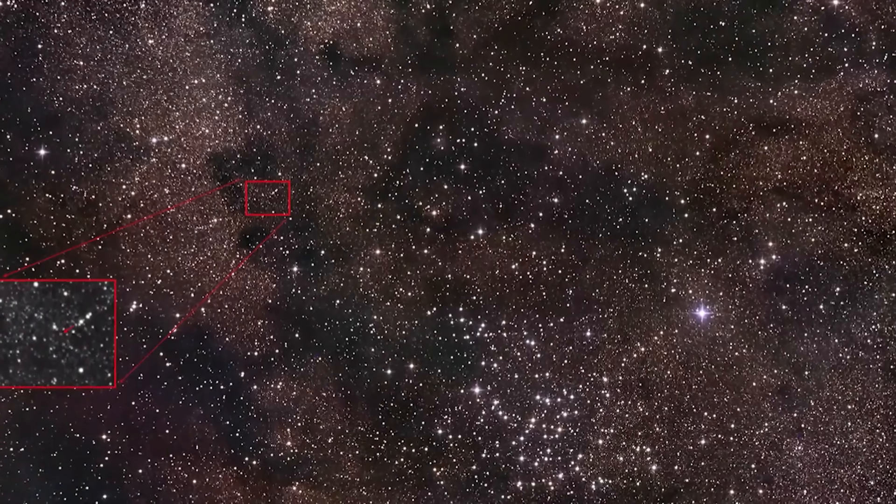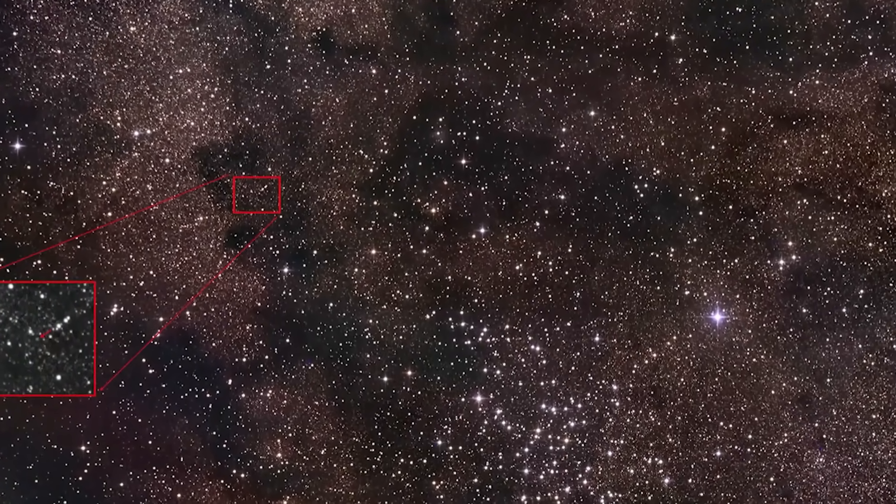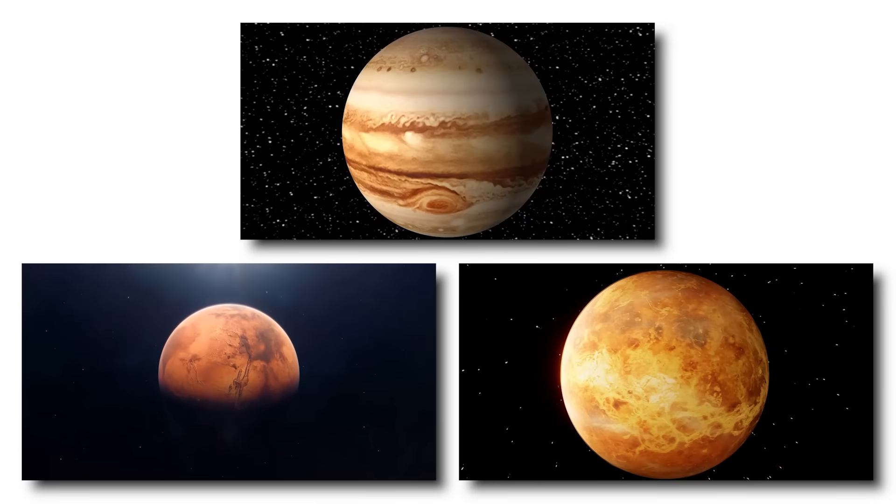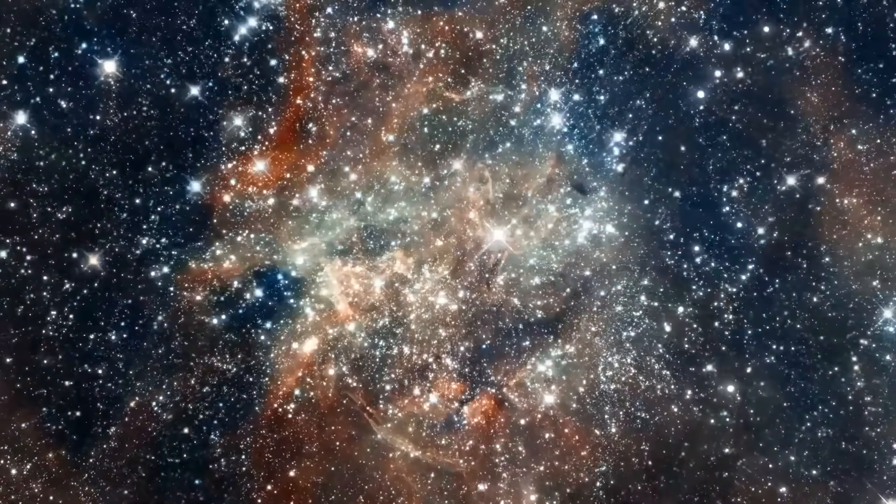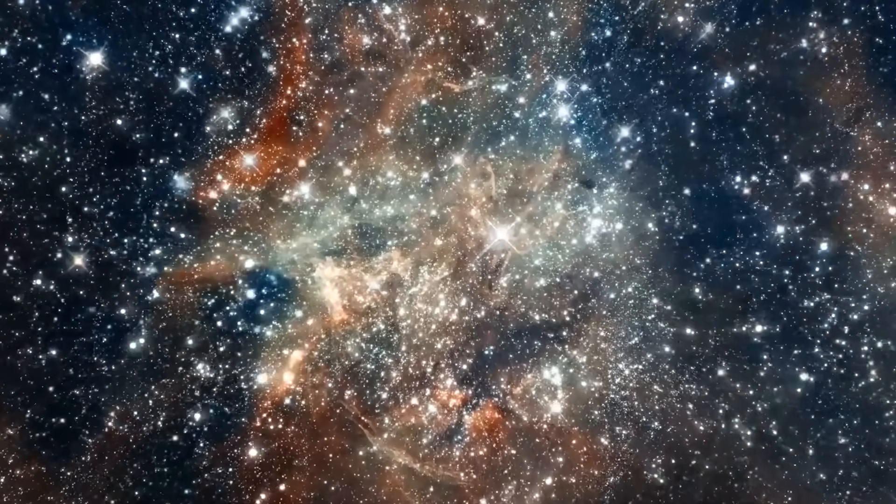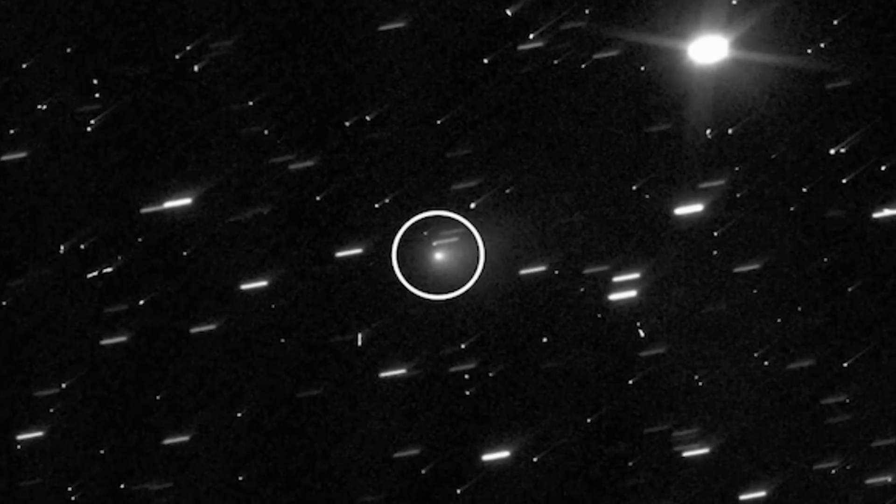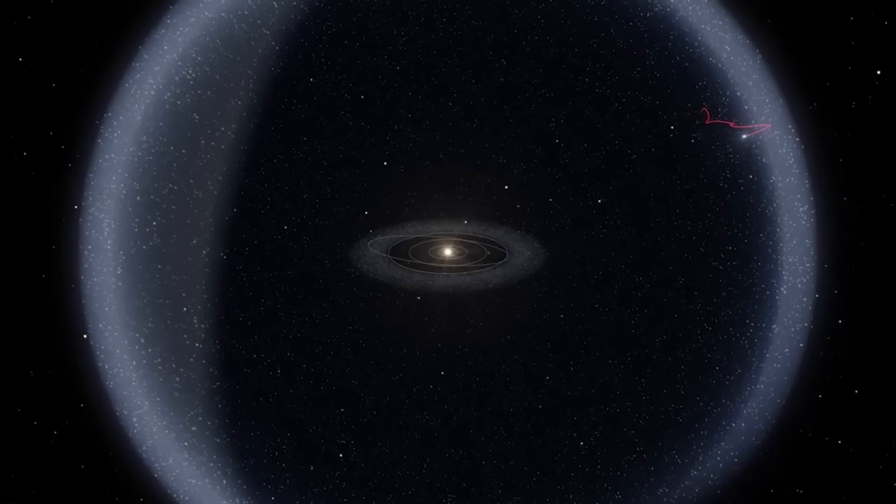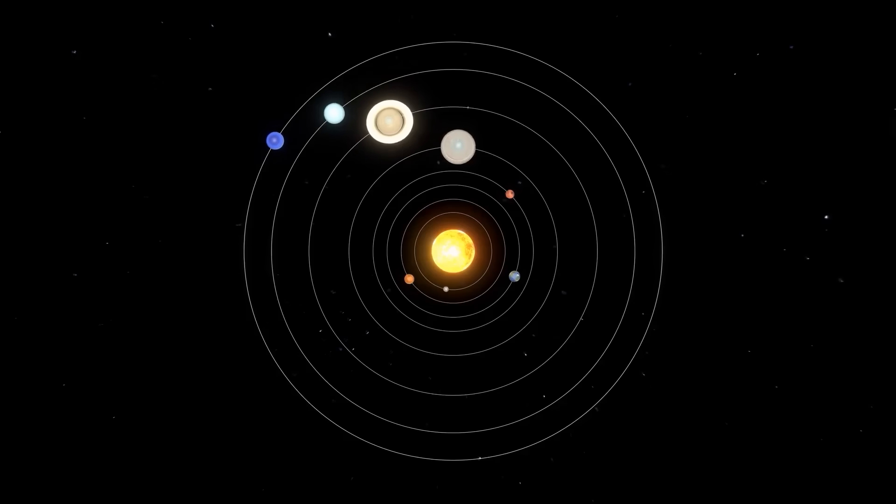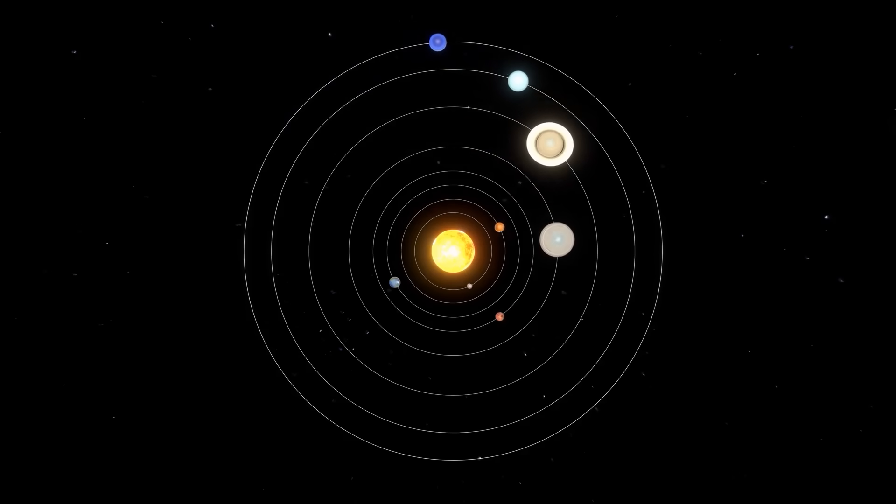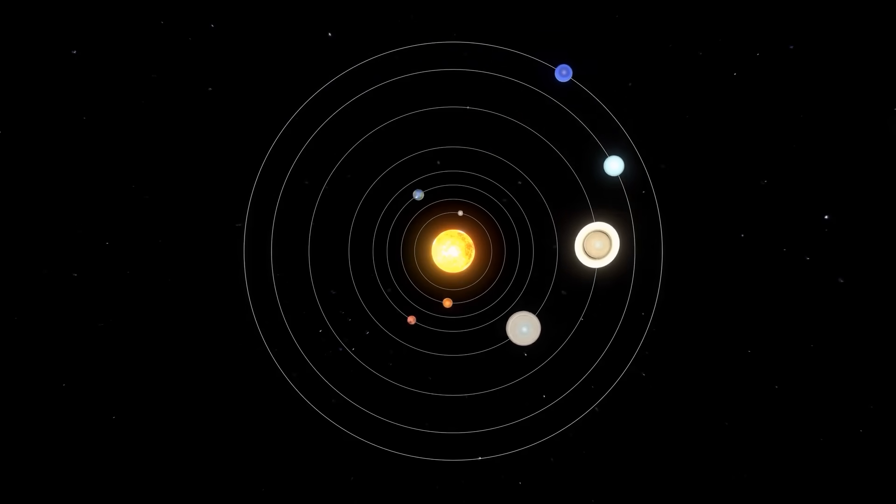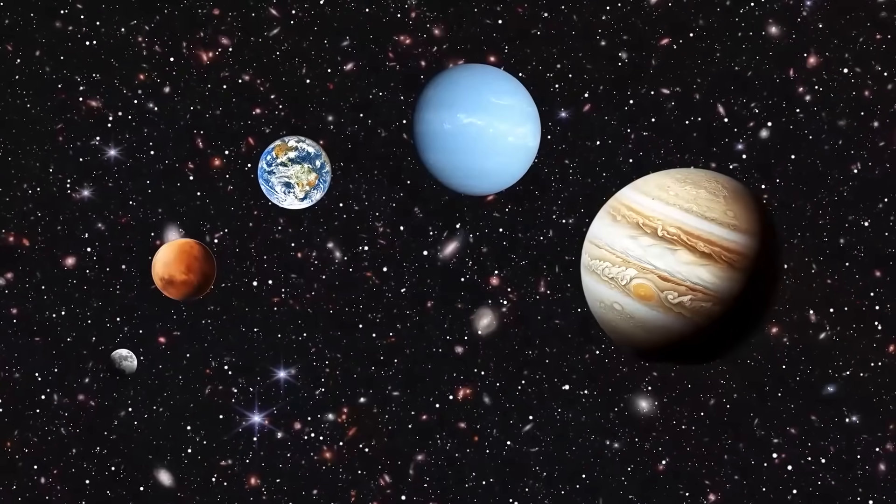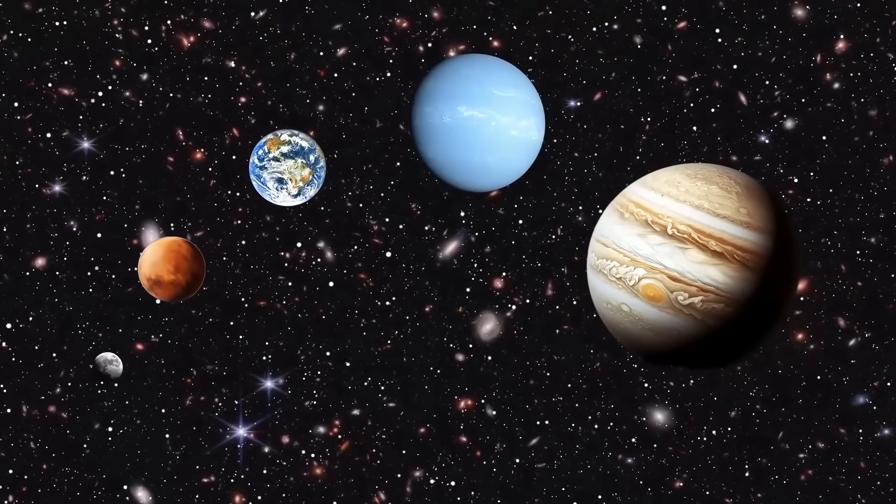But the coincidences don't stop there. As it journeyed inward, 3-Eye Atlas performed what looks like a grand tour of our outer planets. Its path brought it into close alignment with Jupiter, then Mars, then Venus. It was a cosmic billiard shot of unbelievable precision. For a piece of random interstellar debris, this is beyond a fluke. It's a statistical impossibility. This perfect alignment has led some to question if its path was random at all. If you wanted to send a probe to study our solar system, this is the exact fuel-efficient path you would design.